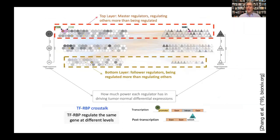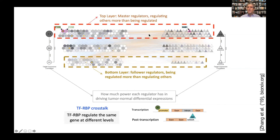Putting RNA binding proteins and TFs together, we can build a regulatory hierarchy. The things at the top of the hierarchy — both RNA binding proteins and TFs — tend to drive gene expression the most. There is a lot of cross-talk between the TF and RNA networks. MYC and sub1 can act together on the same genes, promoting both transcription and post-transcriptional regulation.